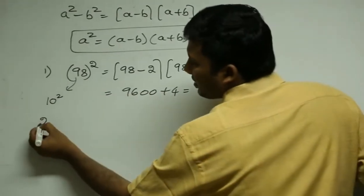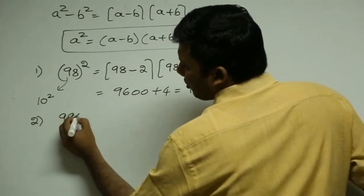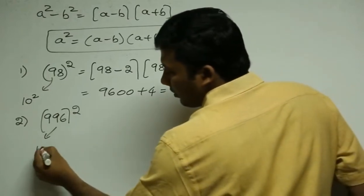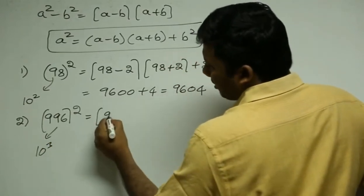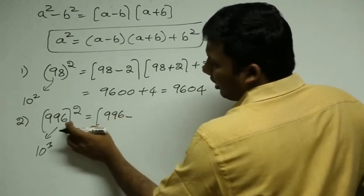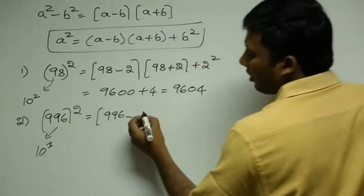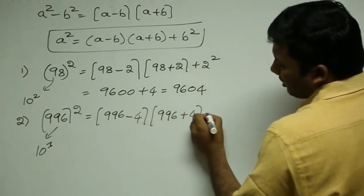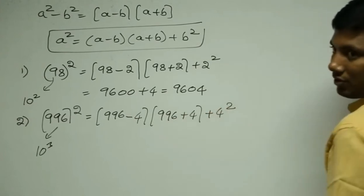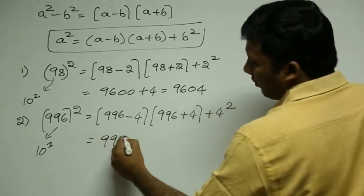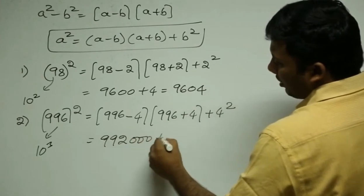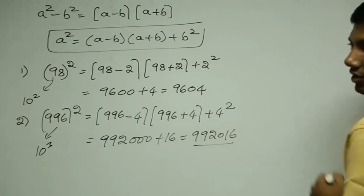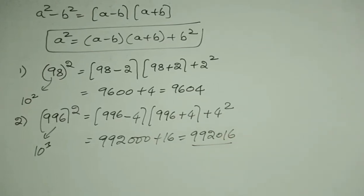One more: 996². Now, 996 is nearest to which number? 1000. So the base is 1000. a is 996, and b is the difference between 996 and 1000, which is 4. So: 996² = (996 - 4)(996 + 4) + 4² = 992 × 1000 + 16 = 992016. Are you all with me?